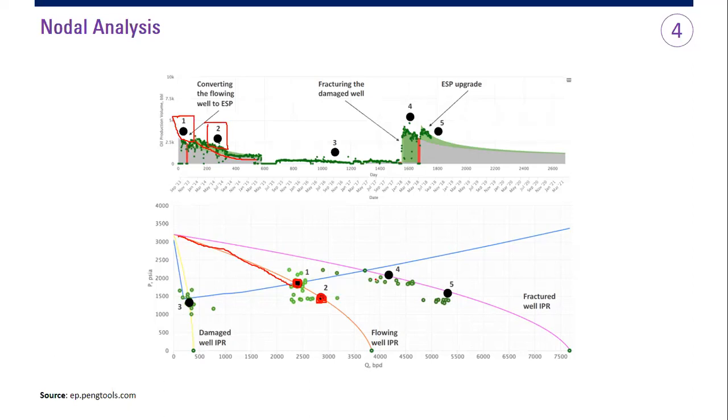All right. But something happened here. So our production rate becomes very, very low. We are now in 0.3. You can see damage well IPR. The IPR curve is very, very thin. Very slim. That's why we do fracturing.